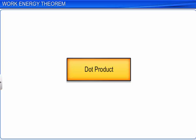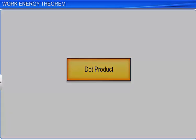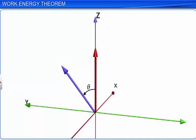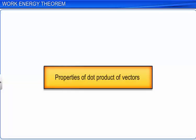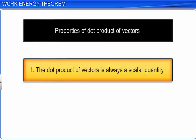Now let's understand dot product in detail. The dot product of two vectors A and B is equal to the product of the magnitudes of the two vectors and the cosine of the angle between the two vectors. The result of a dot product is always a scalar.